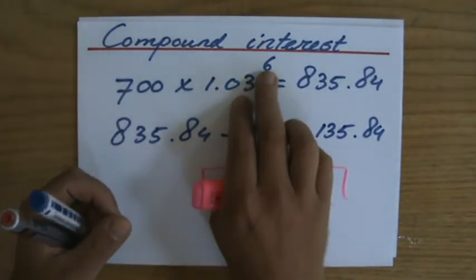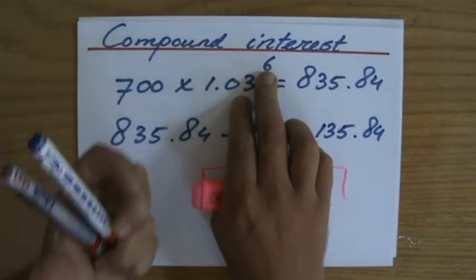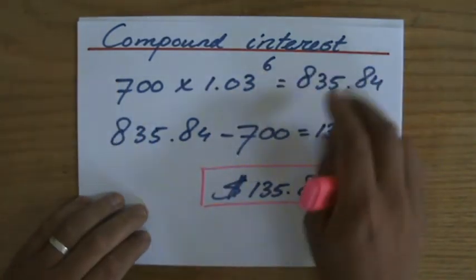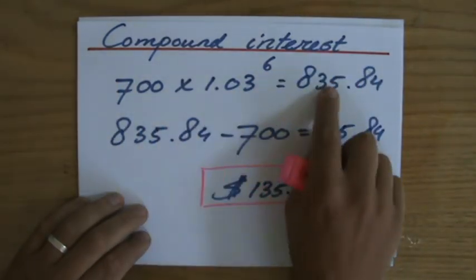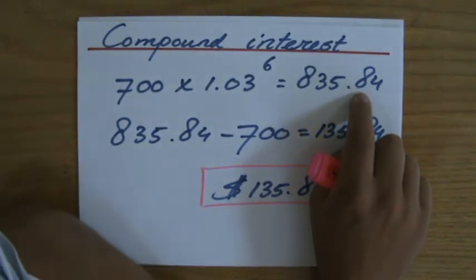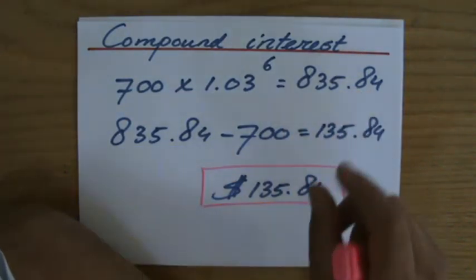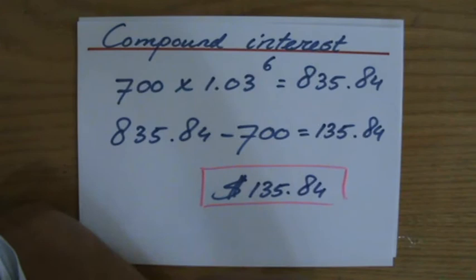So to the power six, this is not simple interest, this is compound interest. So the amount of money I have after those six years is $835.84. Considering the question is, how much interest do I receive?